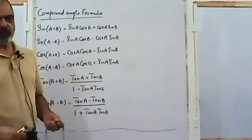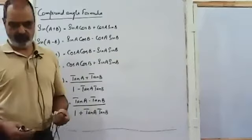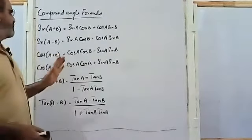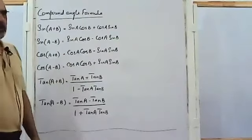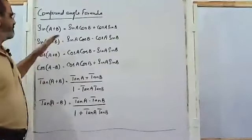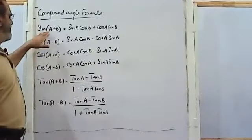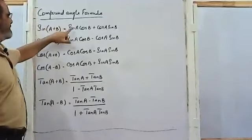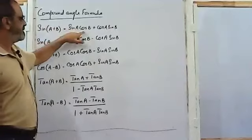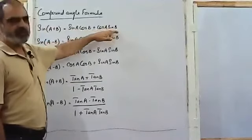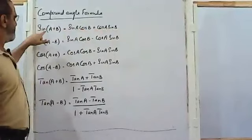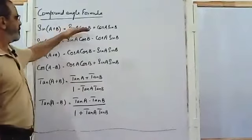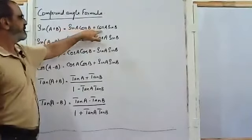How to derive these formulas is not your concern. The formulas are written on the board in front of you. In compound angle formula, the first formula is sine of (A plus B). The sine of two angles A plus B will be sine A cos B plus cos A sine B.